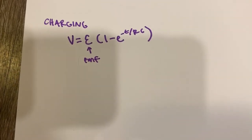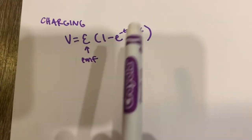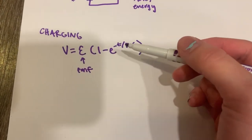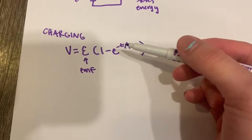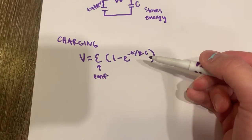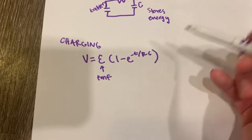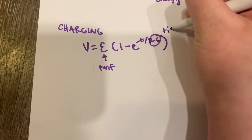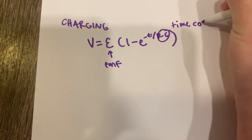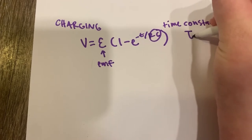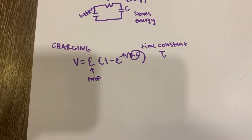And then we got 1 minus E to the negative T over RC. So this T stands for the time that it takes to charge the capacitor. And then RC is the resistance times the capacitance, which comes together to form our time constant. Which is also called tau. And that's written like this. If you guys ever come across tau, that's what that means.